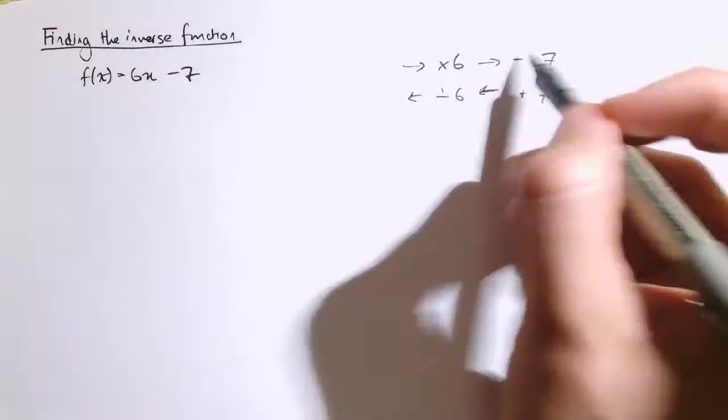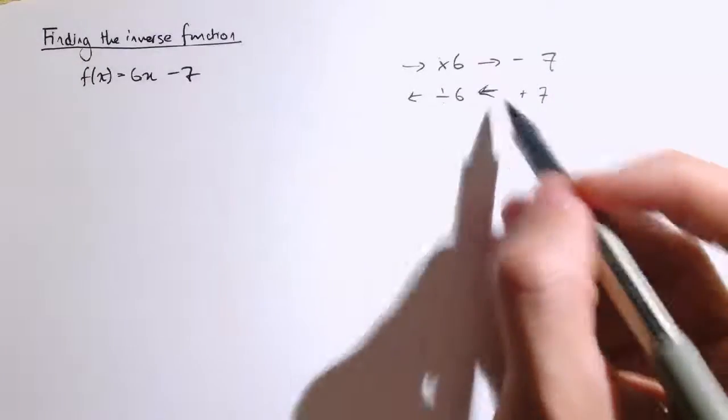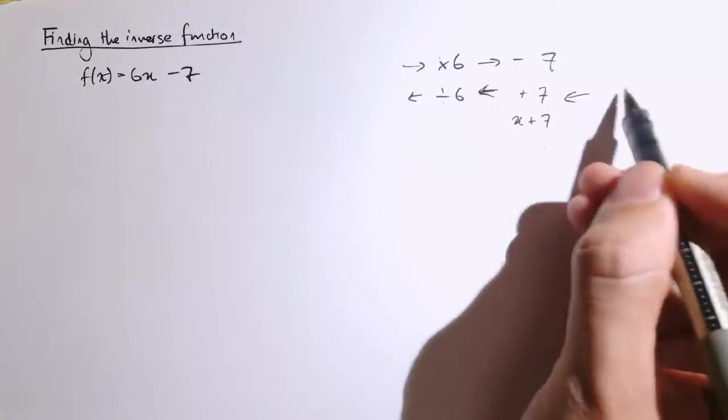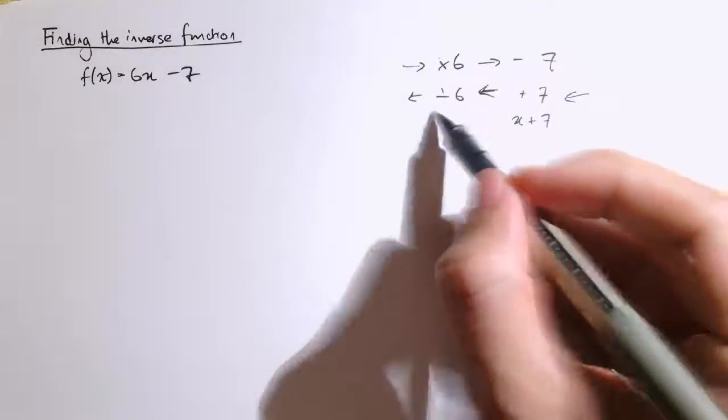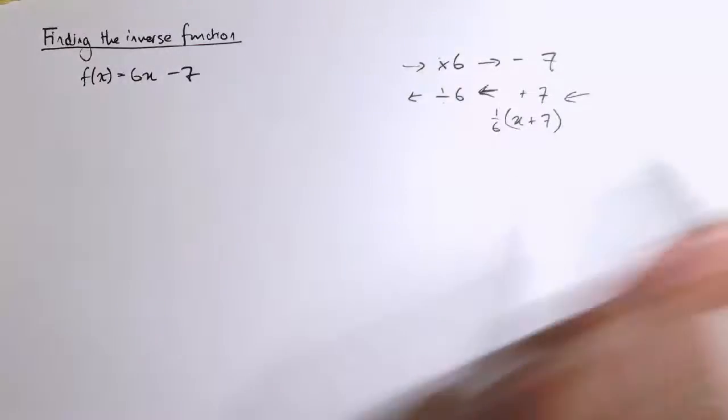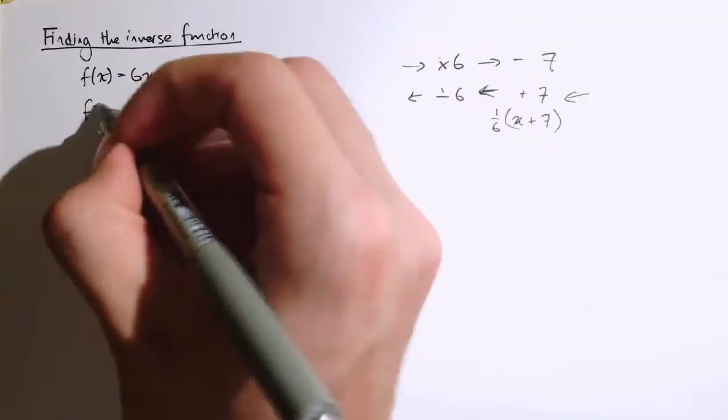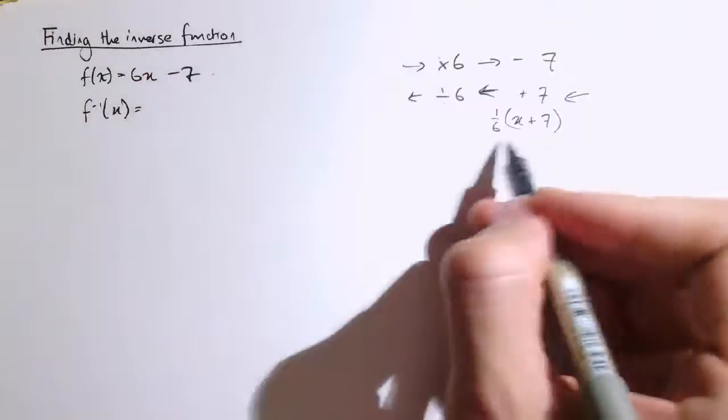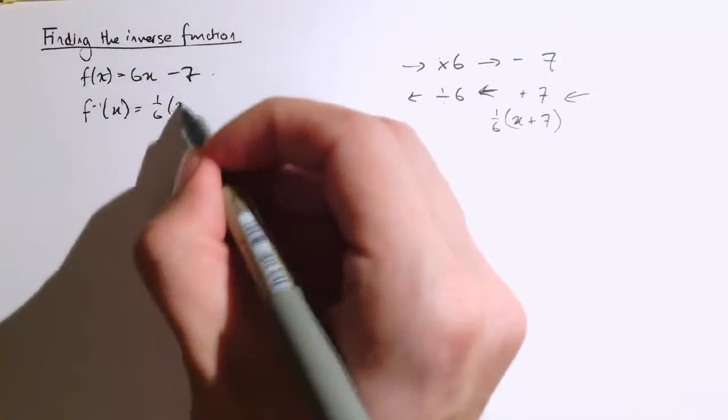So whereas this was 6x minus 7, we're going to work the other way and say it's x plus 7 and then divide it by 6. So the inverse function is 1 sixth x plus 7.